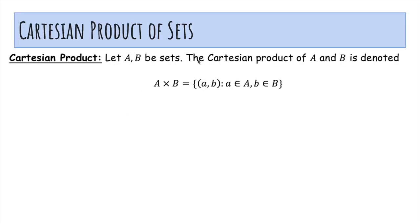So let A and B be sets. The Cartesian product of A and B is denoted A × B, which is the set of all ordered pairs (a,b), where a is in A and b is in B.